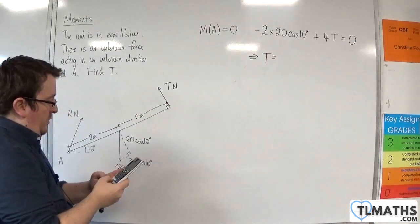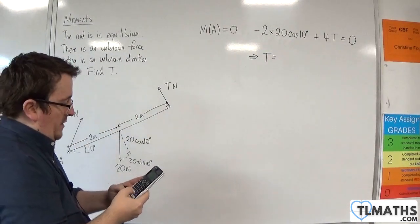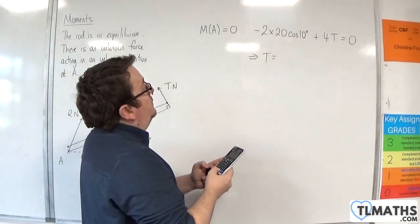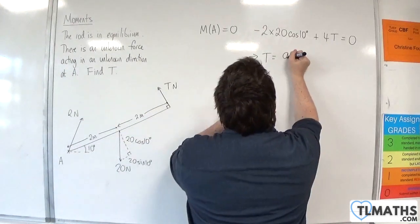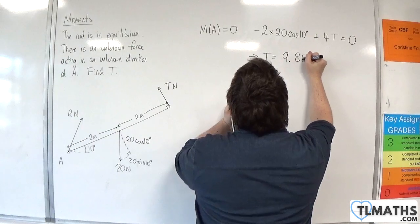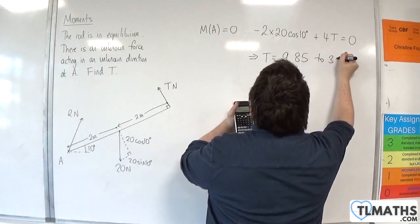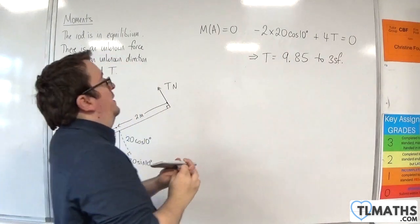So we have 2 times 20 times cosine 10 degrees, and then divide that by 4, and we get 9.85 to 3 significant figures.